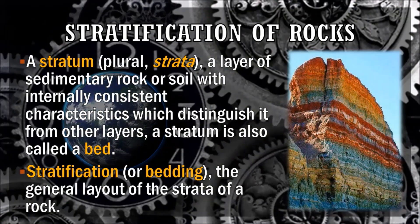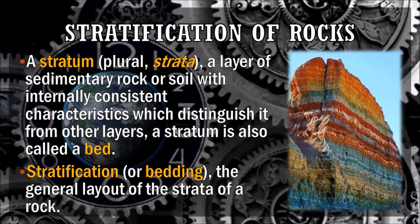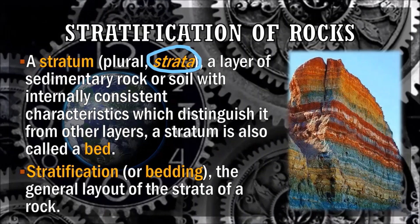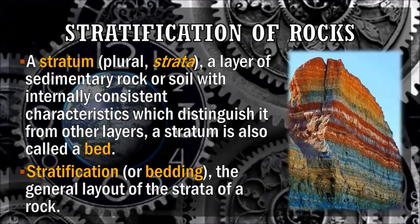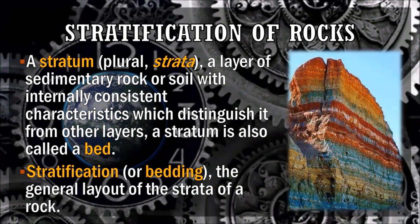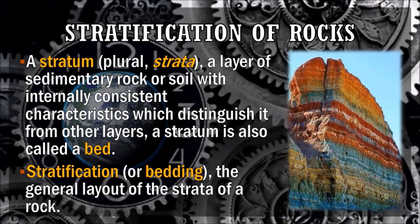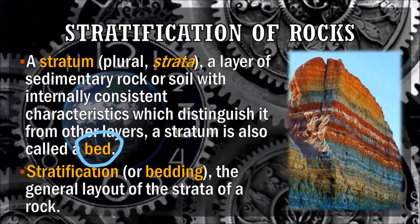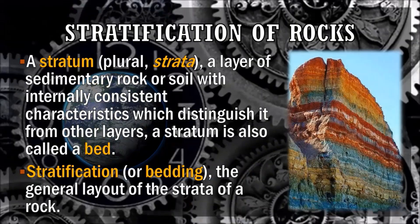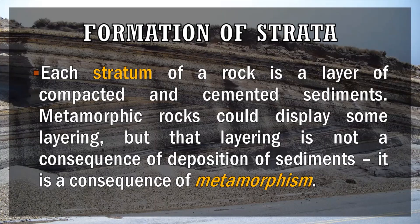As you can see on that picture, stratification on that mountain is evident. Each layer is what we call a stratum — strata in plural form. A stratum is a layer of sedimentary rock or soil with internally consistent characteristics which distinguish it from other layers. In some references, they call stratum a bed. That's why stratification or bedding is the general layout of the strata of a rock. The formation of sedimentary rocks is the same process as the formation of strata.